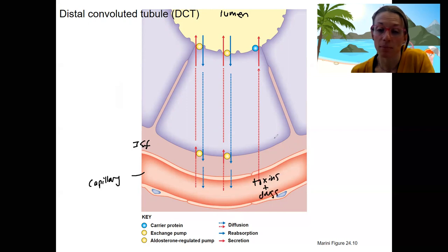Passive diffusion across this basolateral surface, and then this is going to be either a carrier or pump to get this, to secrete these out into the lumen. So we want to get rid of those.